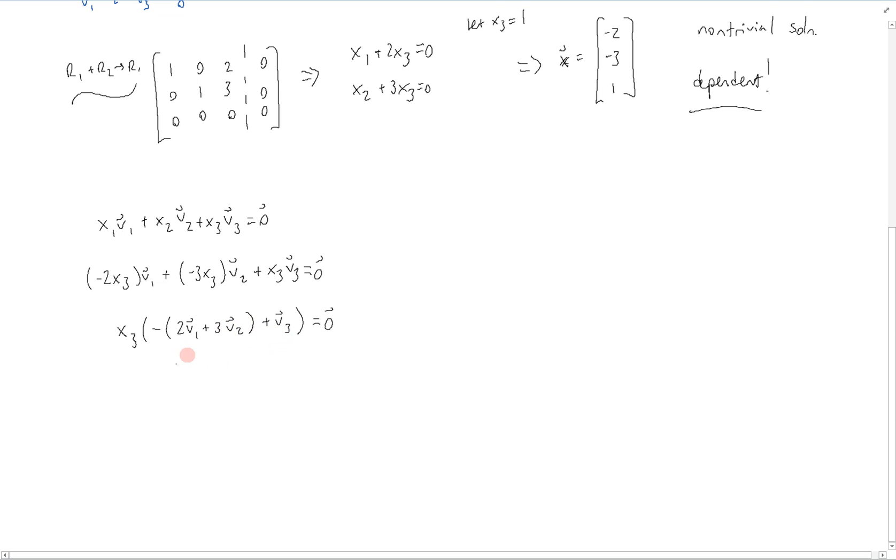Specifically, from this we have that v3 can equal 2v1 plus 3v2. And that is the linear dependence, and we can check that.